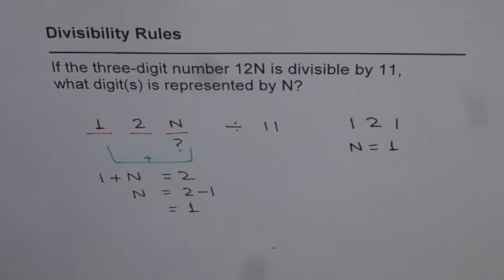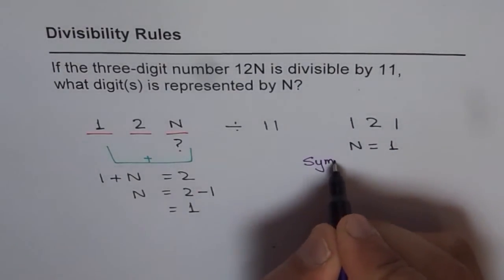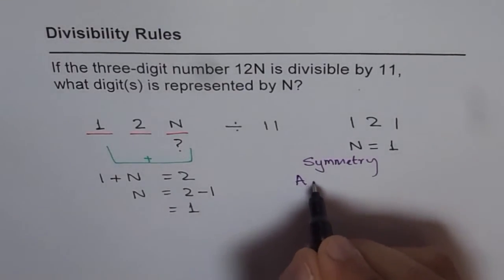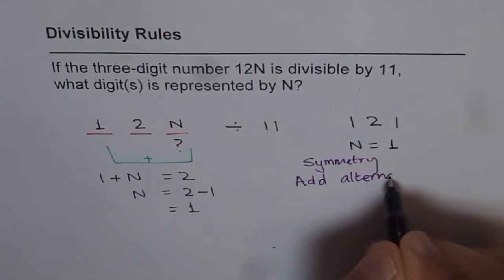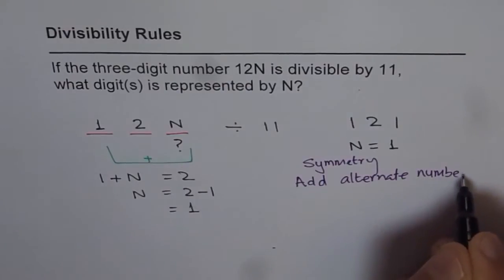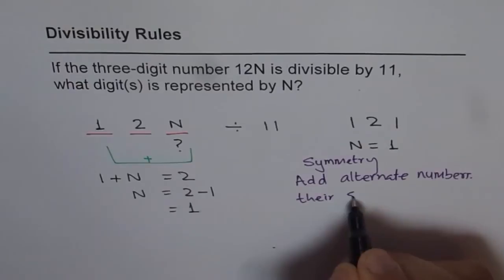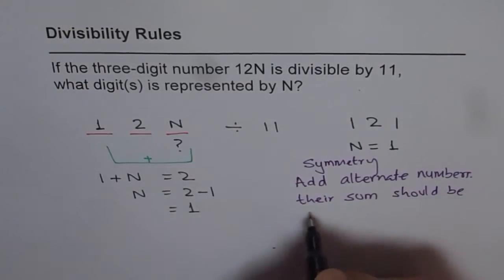So whenever you are dividing by 11, you have to look for symmetry. That is one. And second is addition of alternate numbers.